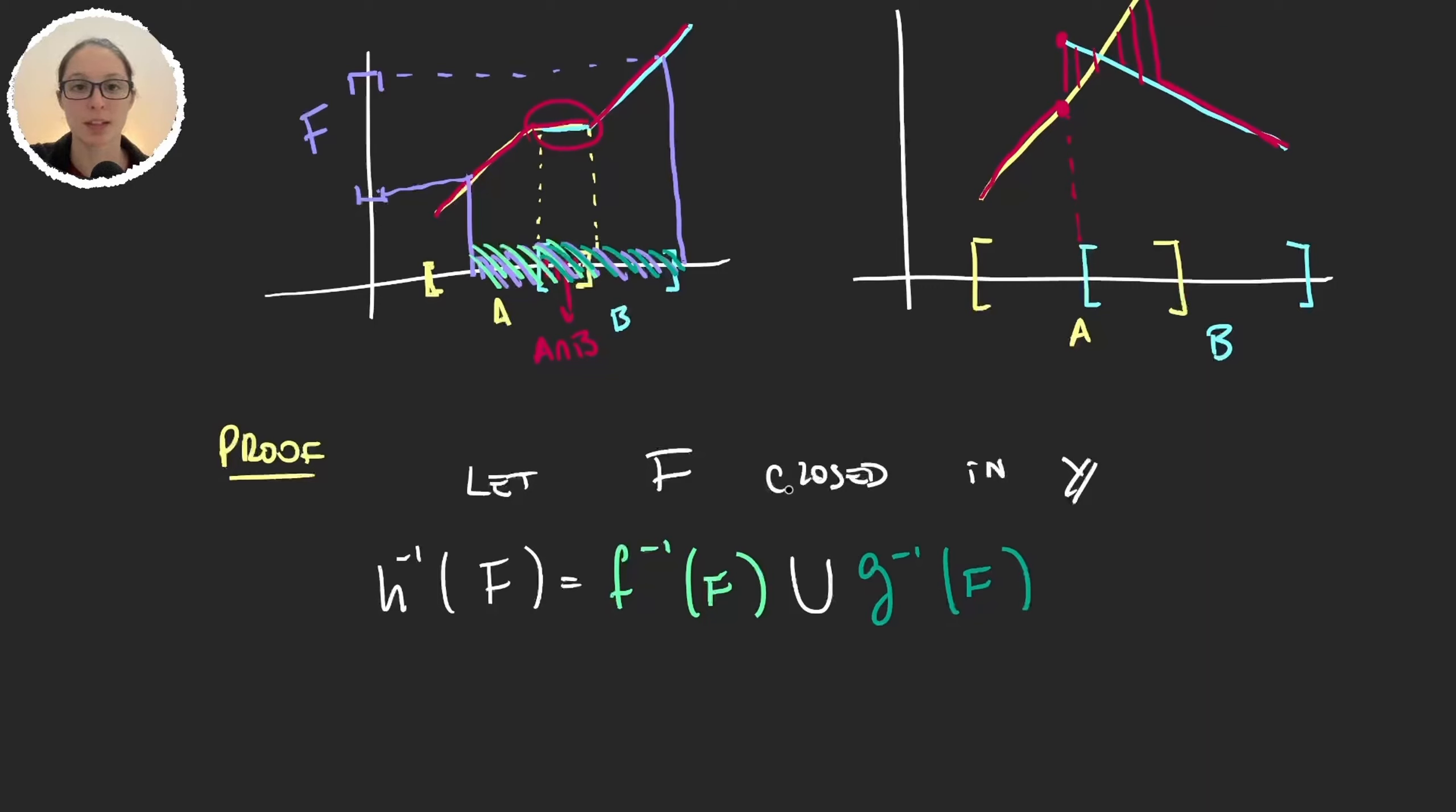Now given that f and g were continuous functions, then the preimages of closed sets for both functions are also closed sets. And we know that the finite union of closed sets is also closed. So we have that the preimage of any closed set is also a closed set, and so h is continuous.